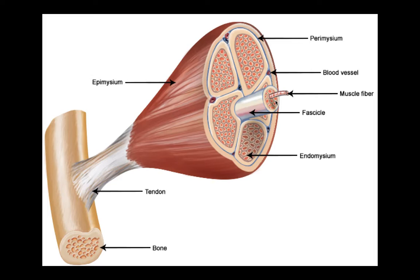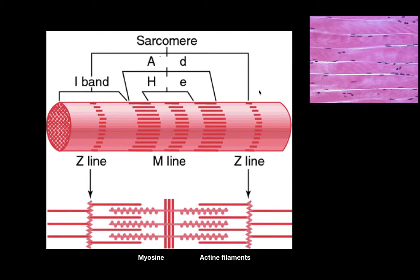Now we go even further — into the muscle cell itself — to understand how the myosin and actin filaments fit in. I've zoomed into a muscle cell here. In a skeletal muscle you can see the striation; between every striation is a unit called a sarcomere. If we zoom inside a sarcomere, we find two key proteins: actin and myosin.